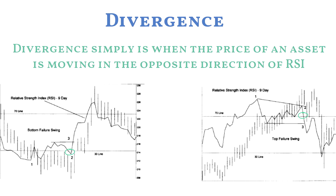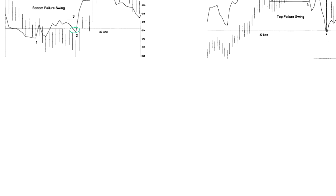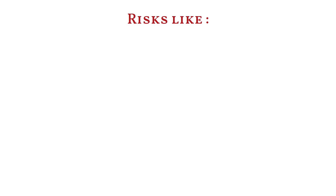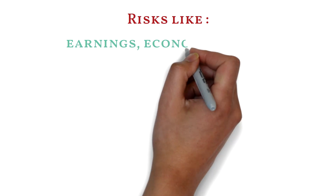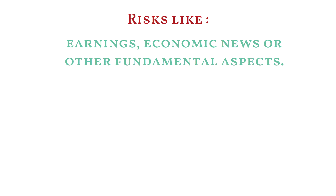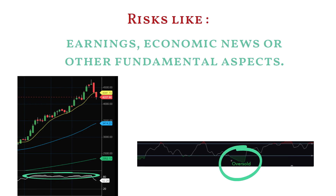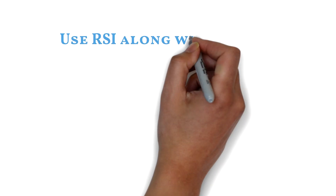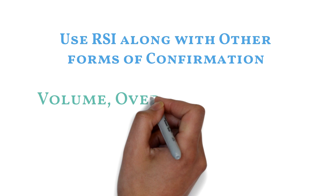However, this is not a sure shot — there are risks attached. RSI is not always accurate as it cannot incorporate events that influence a stock's price, such as earnings, economic news, and other fundamental aspects. Additionally, RSI can remain overbought or oversold for a long period of time, so when divergence suggests markets may move in a certain direction, there is no guarantee. RSI also requires subjectivity that benefits from hindsight, which is why it is usually used with other forms of confirmation such as volume and overall market trends.